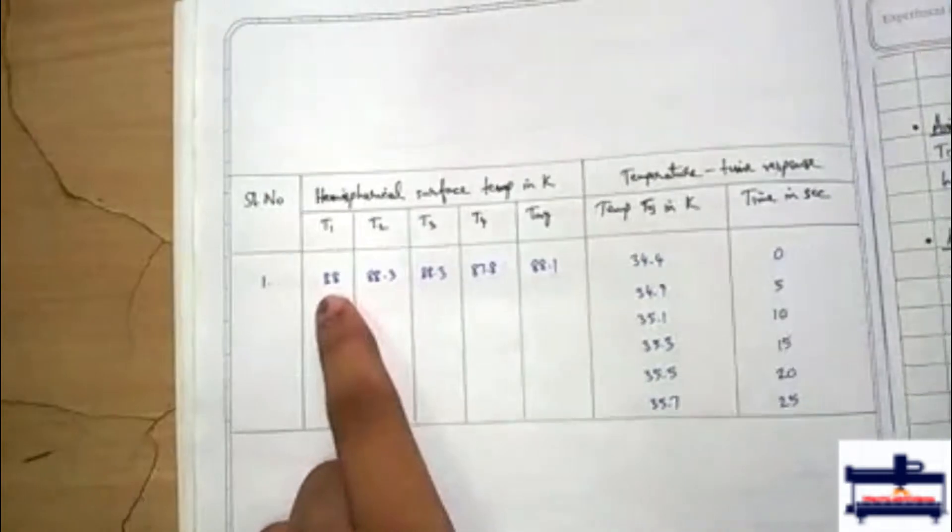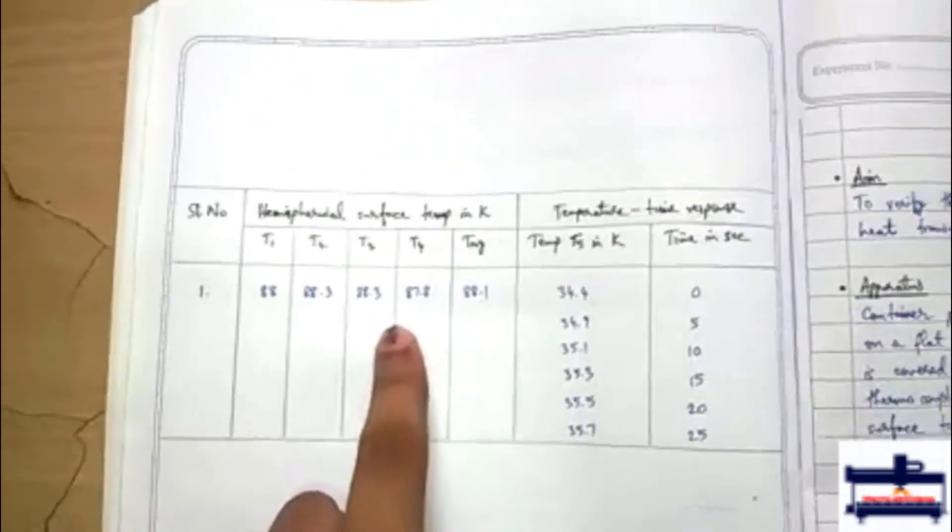Now there are four thermocouples in the hemispherical cylinder: T1, T2, T3, T4, which are noted down. So during this the disk is not placed.